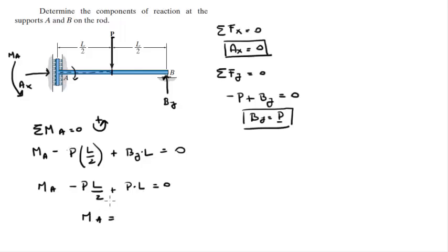moment at A is equal to minus P times L over 2 plus P times L. Therefore, the moment at A is equal to P times L over 2, because minus one-half plus 1 is one-half.